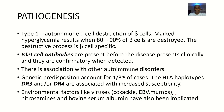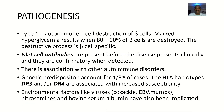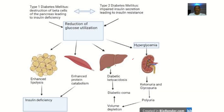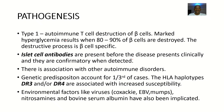For type 1, there is no production of insulin — this picture explains it better. The problem is from the beta cells of the pancreas that produce insulin. In type 1, there is autoimmune T cell destruction of beta cells of the pancreas. Max hyperglycemia results from about 80 to 90% of the beta cells being destroyed. The destruction process is beta-cell specific.